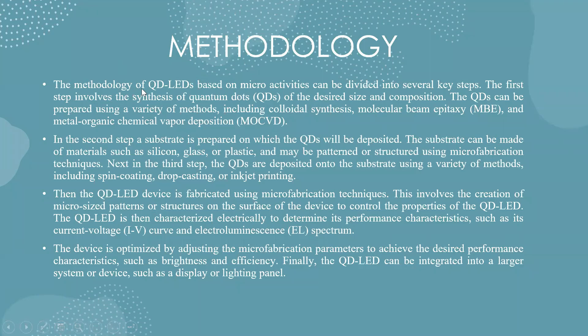The methodology of QD LEDs based on micro activities can be divided into several key steps. The first step involves the synthesis of quantum dots of the desired size and composition. In the second step, a substrate is prepared on which the QD LEDs will be deposited — made of materials such as silicon, glass, or plastic, and may be patterned using micro fabrication techniques. The QD LED device is then fabricated and optimized by adjusting micro fabrication parameters to achieve desired performance characteristics such as brightness and efficiency.